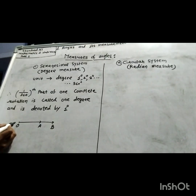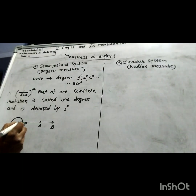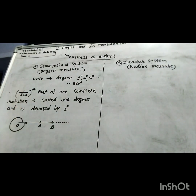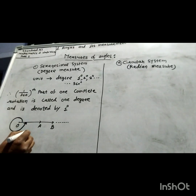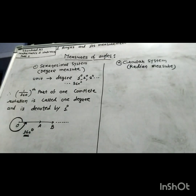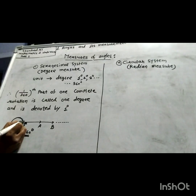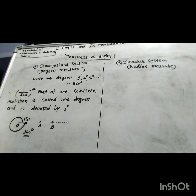One rotation angle starts from the initial ray all the way back to the same side where the terminal and initial rays are along the same side. This complete measurement is 360 degrees. When this one rotation angle is divided into 360 equal parts, the measure of each part is called 1 degree.